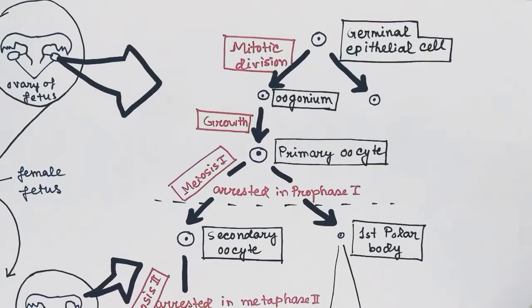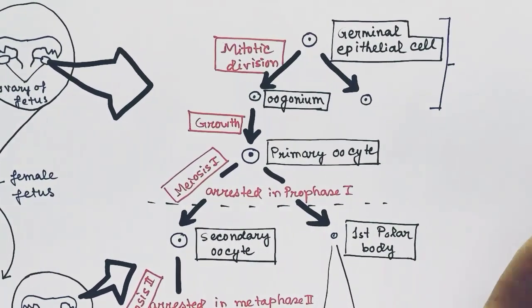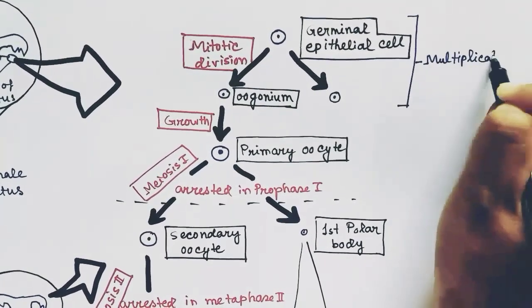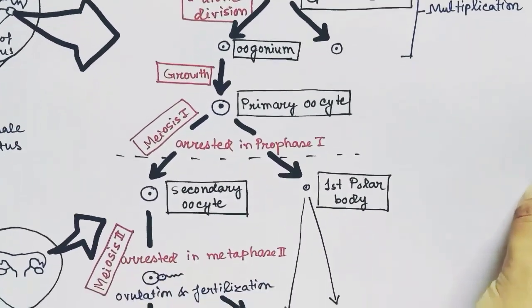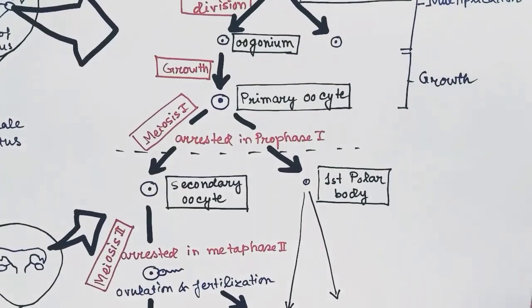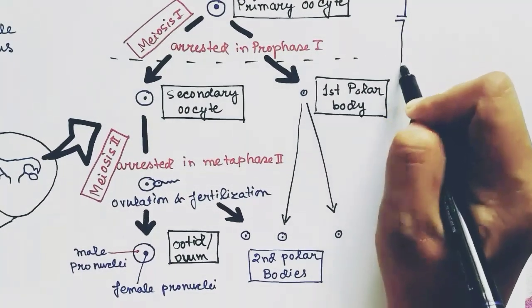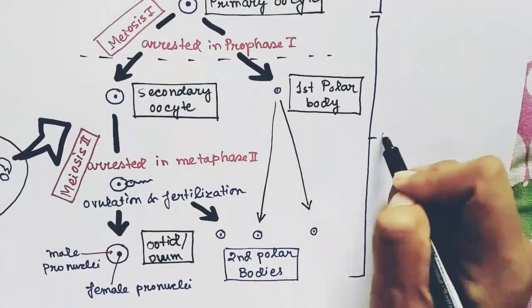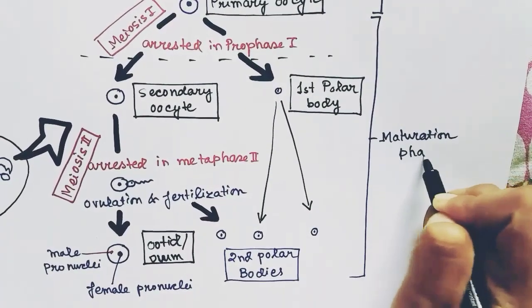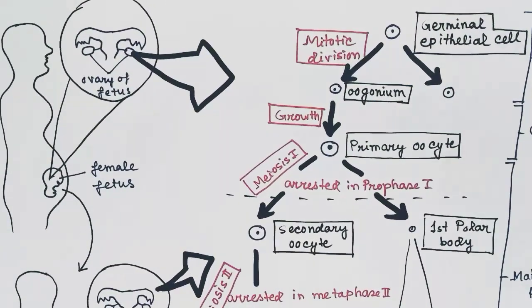In total, three polar bodies are produced. To summarize: from germinal epithelial cell to oogonium formation is called the multiplication phase; from oogonium to primary oocyte is the growth phase; and from primary oocyte to ovum formation is the maturation phase.